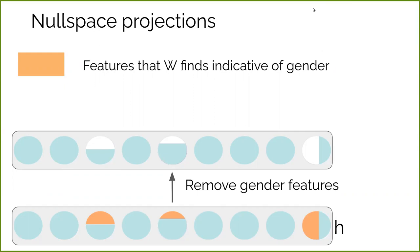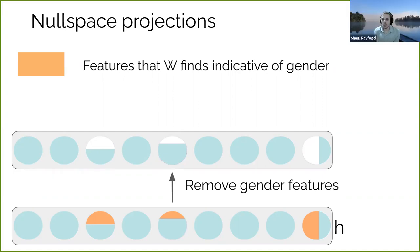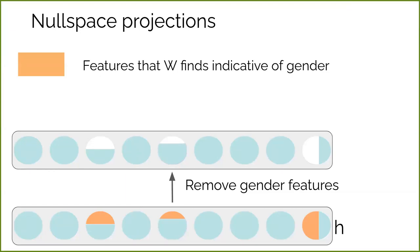Quick question: is there any control over removing information about gender? Is it possible that in addition to removing gender features, we also remove other important information? That's a very good question. We do not explicitly control for that. We can test for it empirically after performing the intervention and see whether we also removed other kinds of information, but we do not explicitly encourage the method to only remove the relevant information.